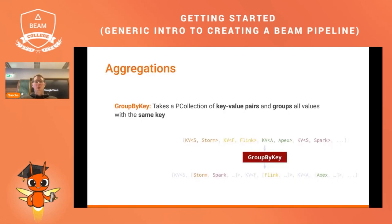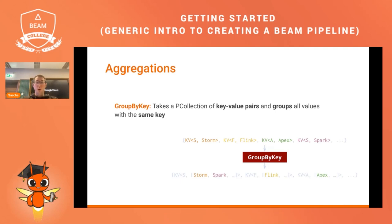Another type of aggregation transform is GroupByKey, where you have key-value pairs as input and want to group all values that share the same key. In the example, the four words have their first letter as the key. Applying GroupByKey gives you key-value pairs: S maps to Storm and Spark, F maps to Flink, and A maps to Apex.